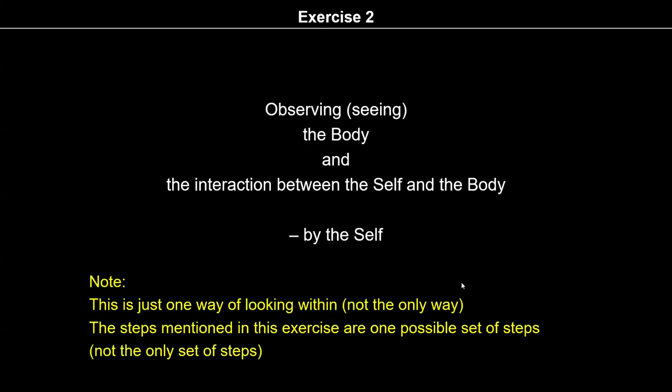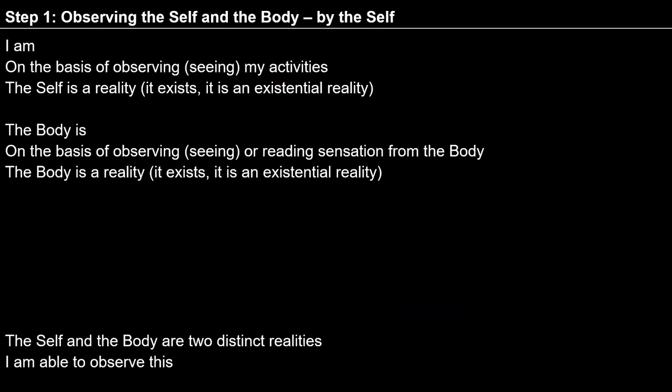In step 1 of Exercise 2, we are trying to observe that I and the body are both distinct realities. I am a conscious unit, body is a material unit. Some biochemical activities are going on in the body, and conscious activities like desire, thought, and expectations are going on in me. On the basis of this direct observation of activities, we can say that I exist and body exists — I am a reality and body is also a reality, and both exist separately, distinctly.